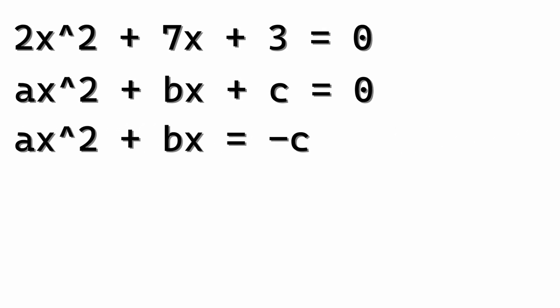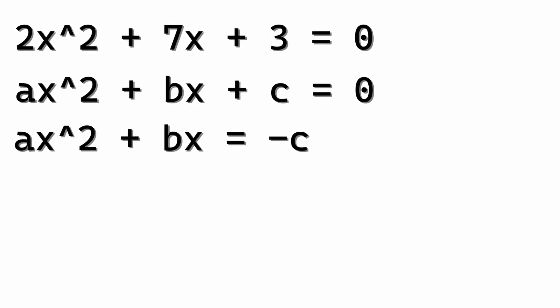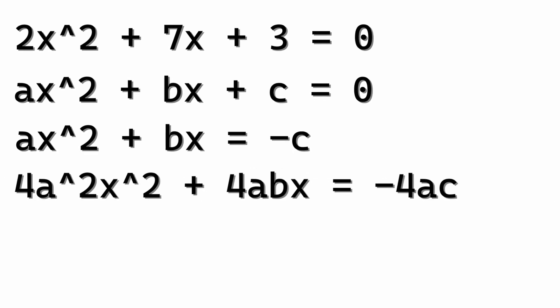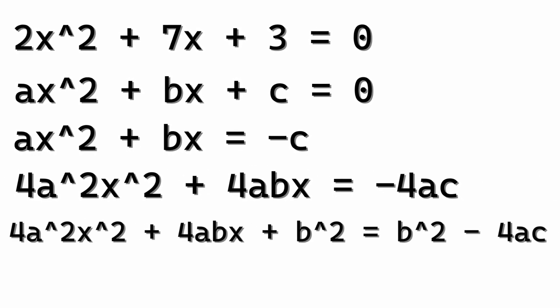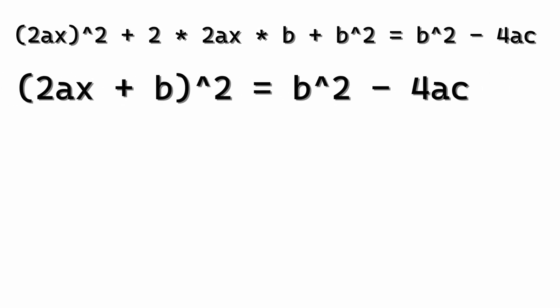First, we're able to subtract c from both sides, then multiply by 4a. This will get us this following combination, where we're then able to add b squared on both sides, and then add some brackets, square them, and get a binomial theorem.